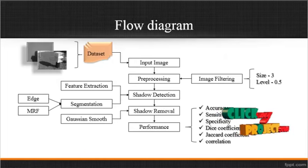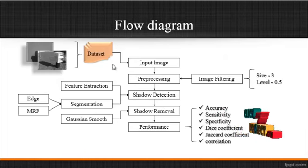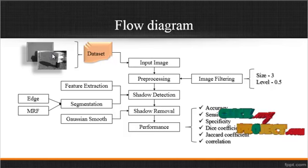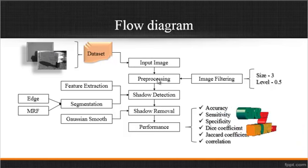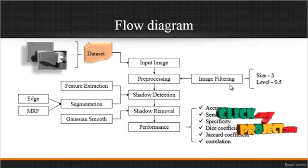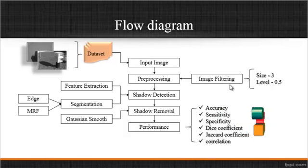Now we are going to discuss about the flow diagram for the process. This is the overall flow structure. At first, the input image is taken from the dataset — a folder which consists of several input images with shadow regions. After getting an image from the dataset, pre-processing is carried out using image noise filtering with a Gaussian filter, with filter size 3 and filtering range 0.5.